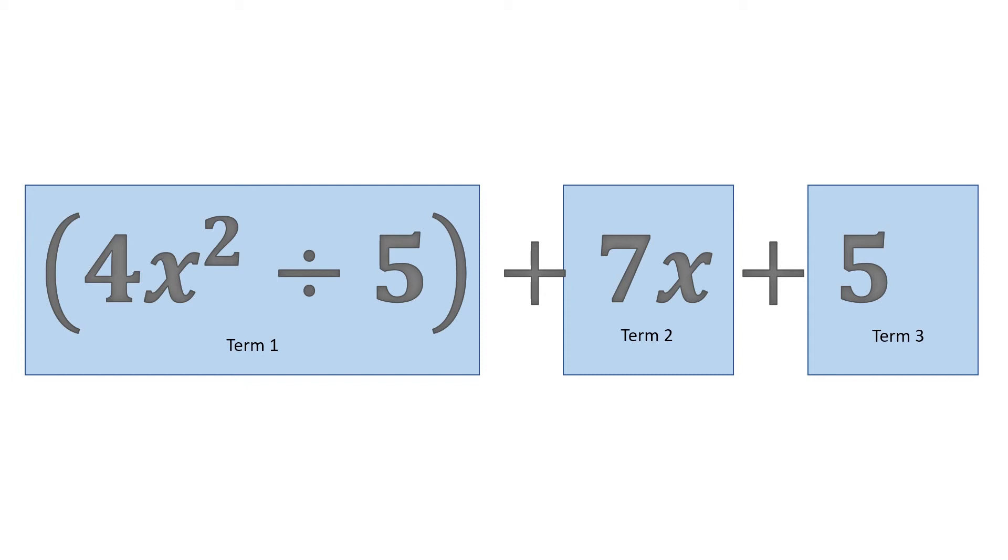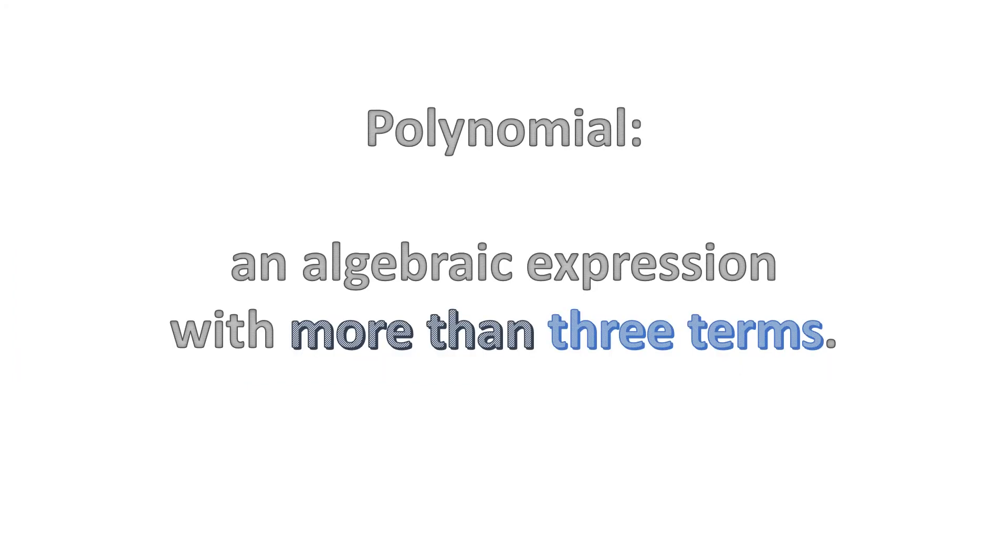Polynomial. What is the definition of a polynomial? A polynomial is an algebraic expression with more than three terms. So we get a monomial, a binomial, a trinomial and then a polynomial.